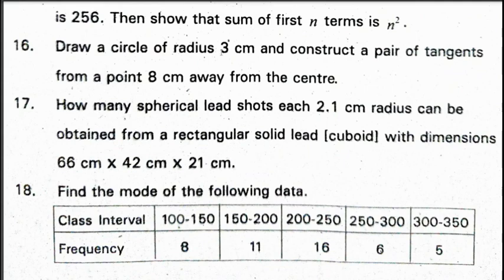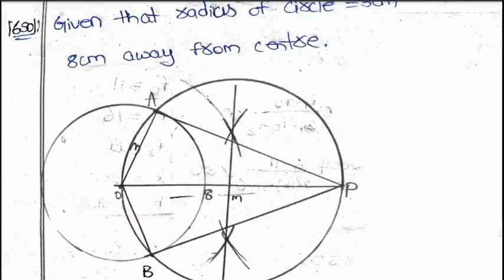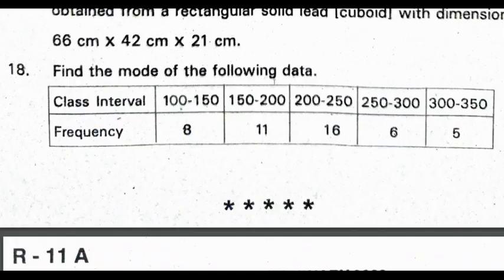Sixteenth question. Draw a circle of radius 3 cm and construct a pair of tangents from a point 8 cm away from the center. This is the construction. First, we need to draw a circle. Draw 8 cm line. Draw a perpendicular bisector. Then, draw a circle with radius OM. The bigger circle meets the smaller circle at A and B. Join AP and BP which are the given tangents.